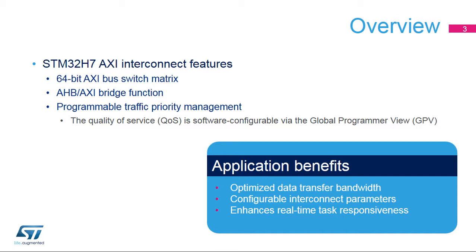Its main features are a 64-bit AXI bus switch matrix with 7 AMBA Slave Interface Blocks, or ASIBs, and 7 AMBA Master Interface Blocks, or AMIBs, in D1 domain. Additional features include an AHB-AXI bridge function built into the ASIBs, concurrent connectivity of multiple ASIBs to multiple AMIBs, and programmable Traffic Priority Management, QoS, or Quality of Service.